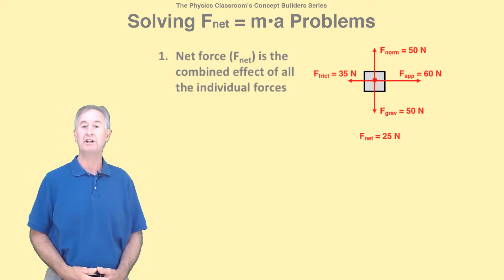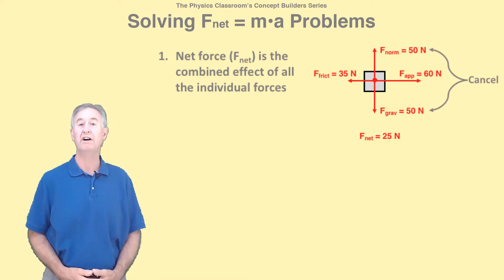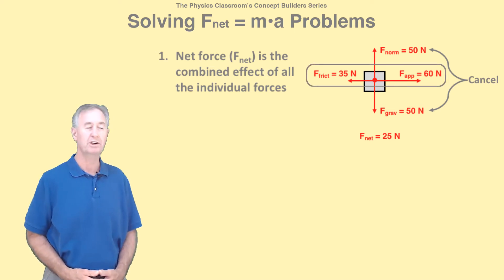Each force is represented by a vector arrow. Their numerical values are listed. The effects of the up and down force cancel each other, but the right force is 25 newtons greater than the left force, making the net force 25 newtons to the right.